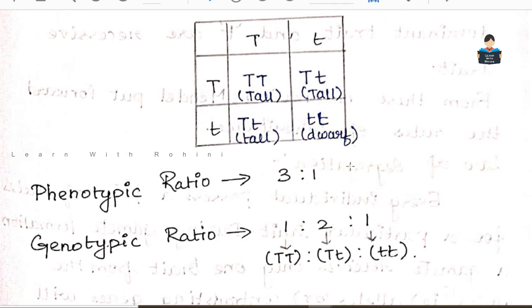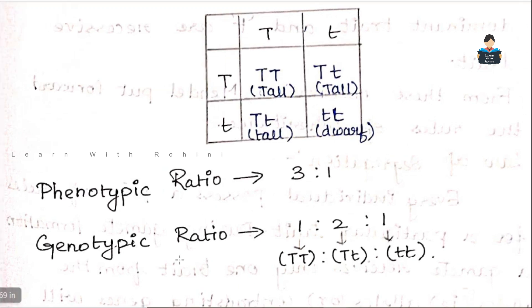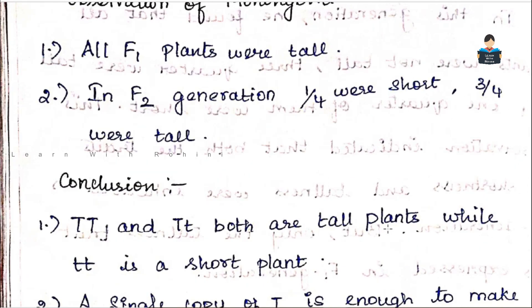Phenotype refers to physical appearance — three tall plants and one dwarf plant. The genotype is: one Capital T Capital T, two Capital T small t (heterozygous), and one small t small t. This gives a genotypic ratio of 1:2:1.